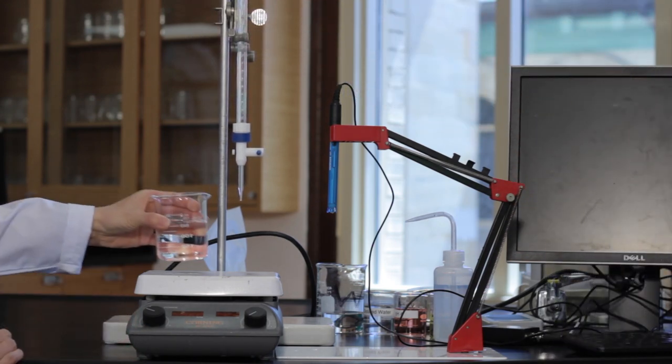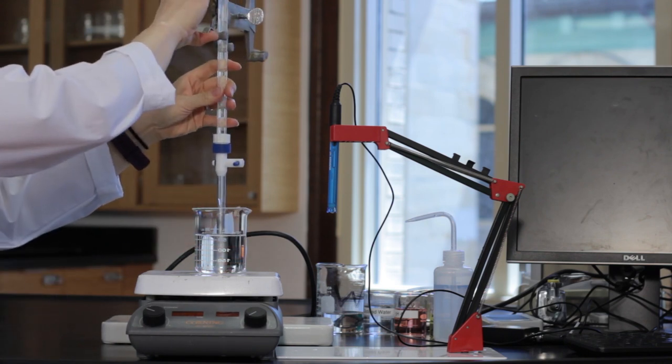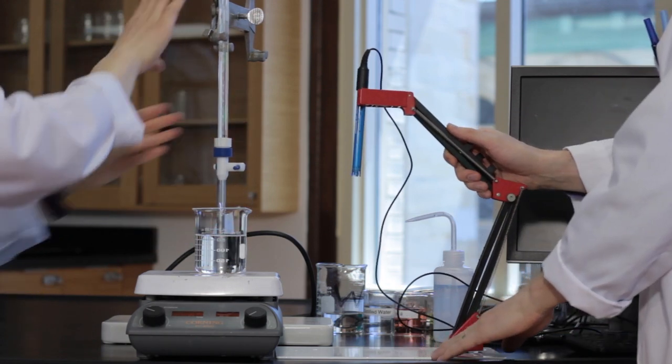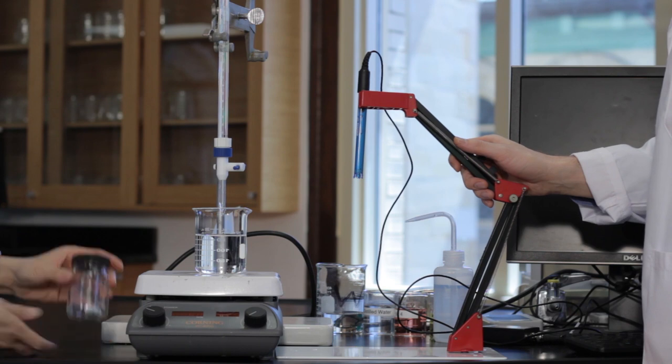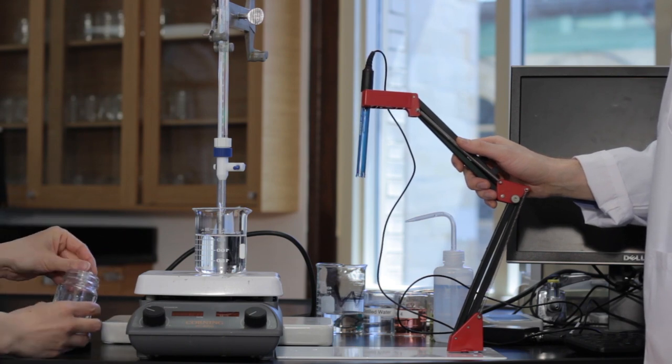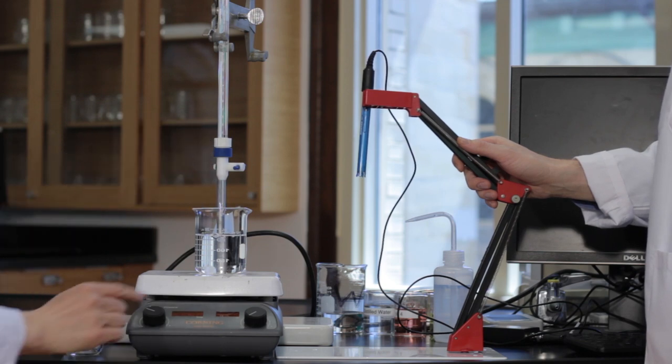Place the beaker of acid solution previously prepared onto a stir plate. Lower the burette so that the tip is at the top of the beaker to minimize any splashing. Add a magnetic stir bar to the beaker and stir the solution. Ensure the stir bar is spinning fast enough to mix the entire solution but not to a point where it's splashing.